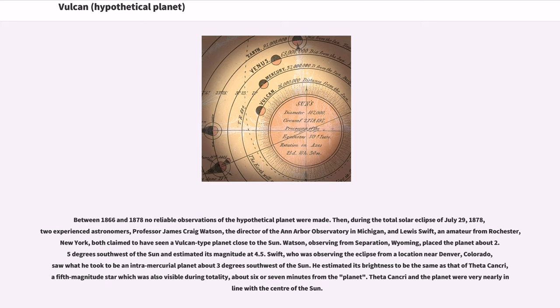Then, during the total solar eclipse of July 29, 1878, two experienced astronomers, Professor James Craig Watson, the director of the Ann Arbor Observatory in Michigan, and Lewis Swift, an amateur from Rochester, New York, both claimed to have seen a Vulcan-type planet close to the Sun.